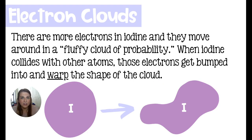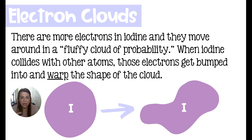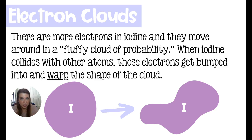It's important to note that electrons are not in distinct rings as in the Bohr model. The wave mechanical, or electron cloud, model tells us electrons exist in a weird, fluffy cloud of probability — they don't follow a specific, predictable orbit. So when an iodine atom is floating through space and bumps into the walls of its container or another iodine atom, the electrons in that cloud are going to warp and become misshapen. Iodine normally has its electrons organized in a spherical shape, but when bumped into, it turns into a weird, amorphous blob.